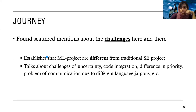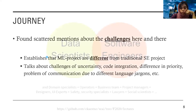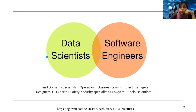These papers establish that machine learning projects are very different from traditional software engineering projects, and they face different challenges. For example, there is the challenge of uncertainty that leads to the exploratory nature of machine learning projects. Software engineers often face problems integrating code from data scientists. There are also many issues around differing priorities — data scientists often complain that data gathering doesn't get the priority they believe it should. There is also a communication problem due to different language and jargon.